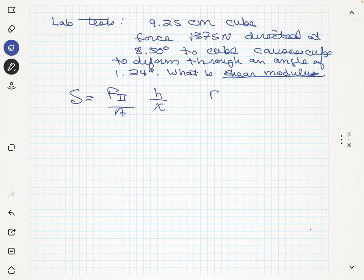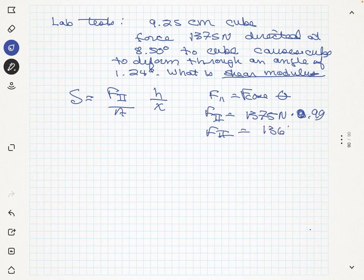So our F is the cosine theta. It's F times the cosine of theta. So this will be 1,375 times 0.99. That was 1,361 newtons.